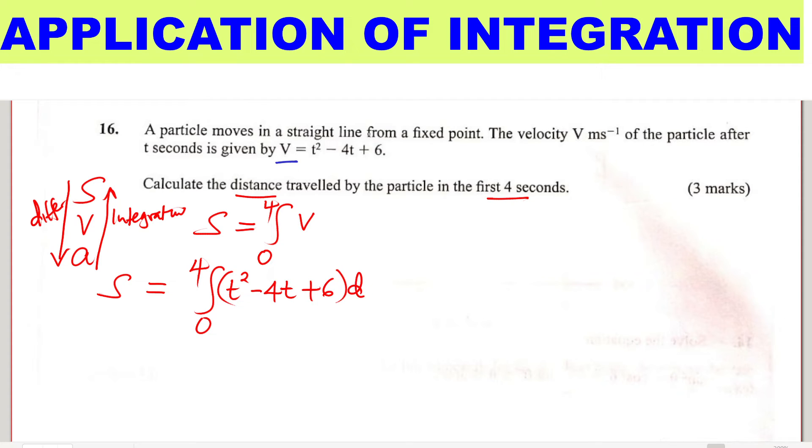And you're doing this with respect to t. So when you integrate these, you shall have t cubed divided by 3. Then you integrate 4t, you get 4t squared divided by 2, which will be 2t squared when you simplify. When you integrate 6, you get 6t. Then you must add the constant of integration. The square brackets are there, the limits 0 to 4.